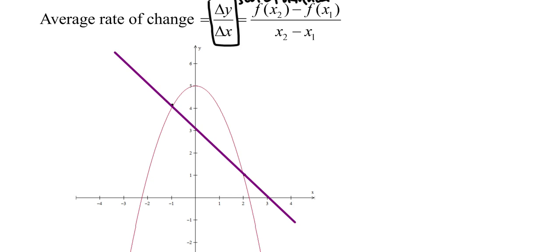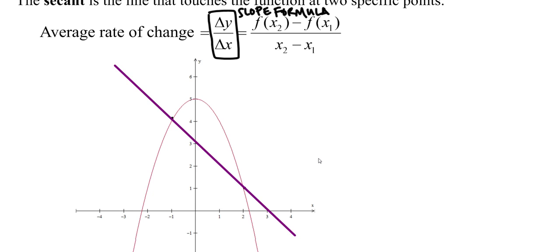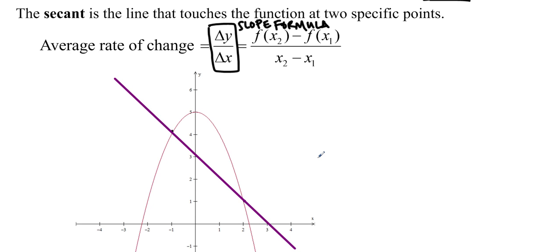You could do that by either estimating the y values and then dividing by the change in the x values. Or if you have the function defined, which I do actually, I know this is f of x equals negative x squared plus 5, then I can plug it into this formula, f of x2 minus f of x1 over x2 minus x1, or in other words, y2 minus y1 over x2 minus x1.